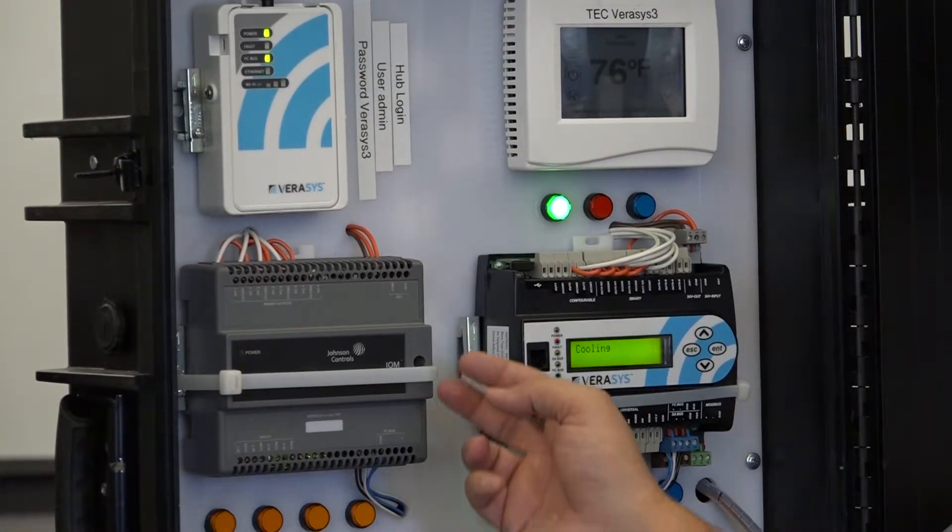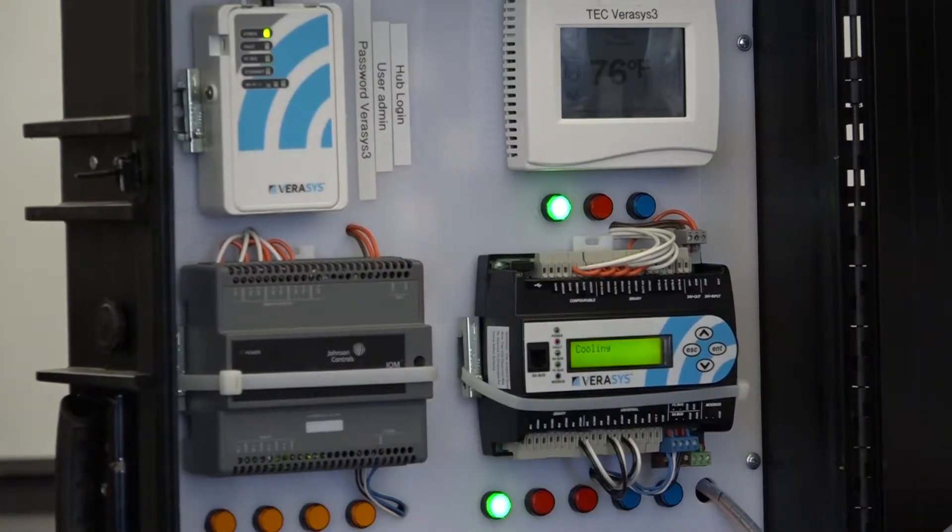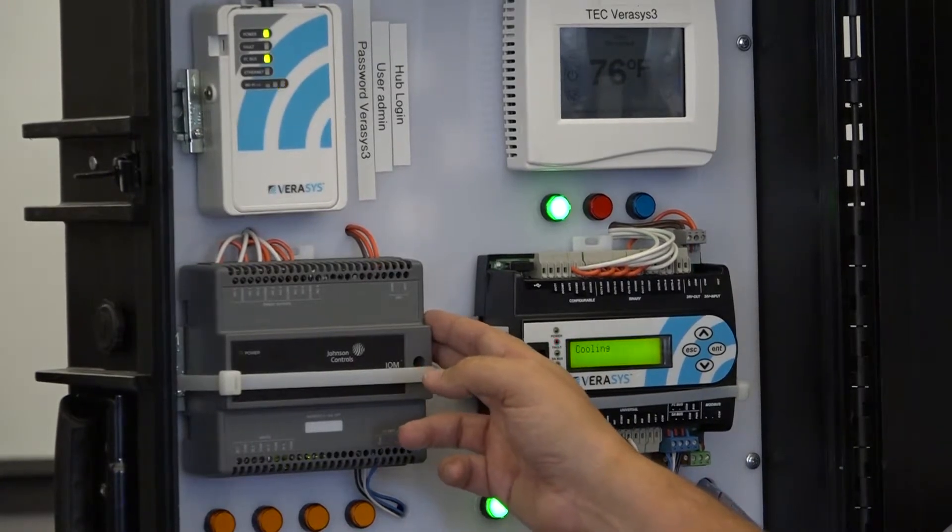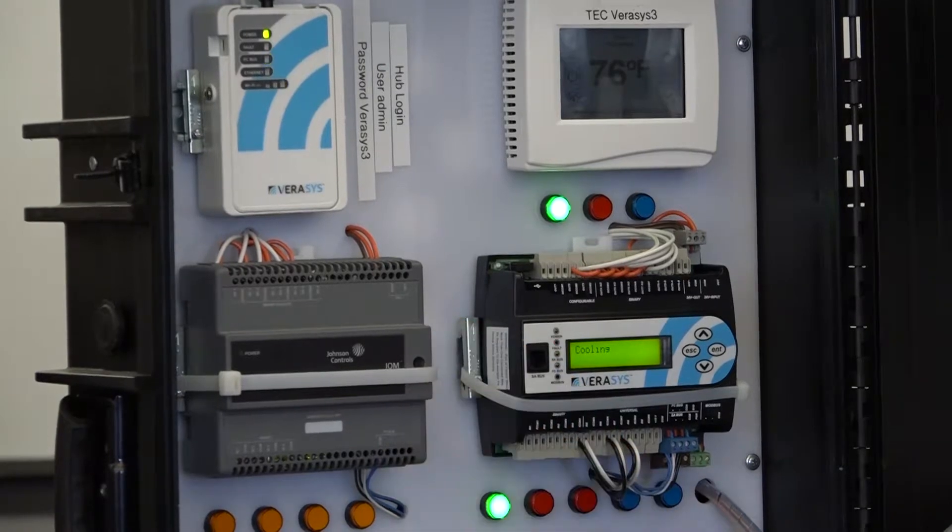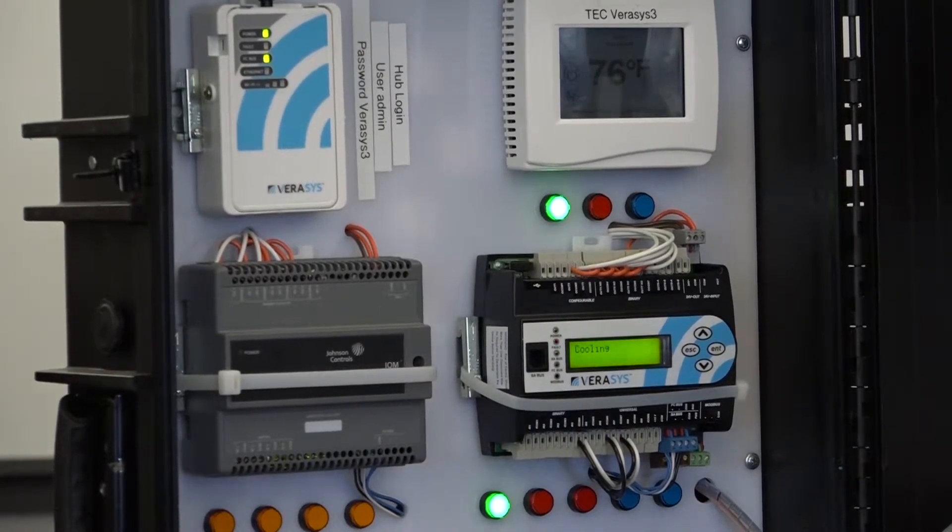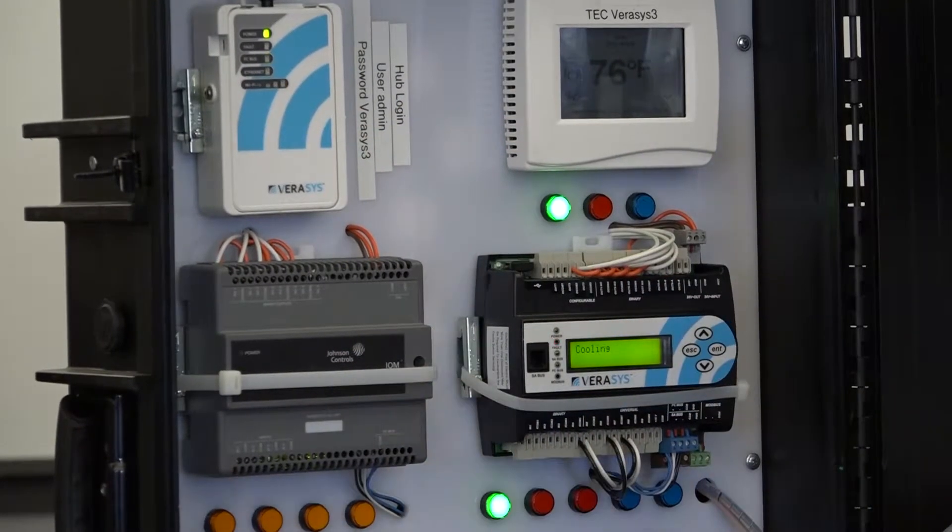In addition to interlocks, there are features on the smart building hub called load shed and global shutdown. These require an IOM100 installed. Load shed takes one of the binary inputs, and if it makes, it will initiate load shed across the Veris system.